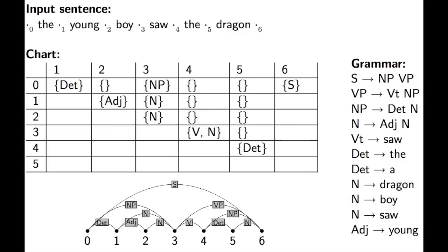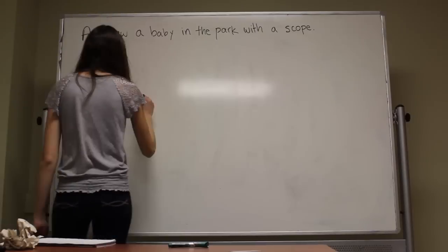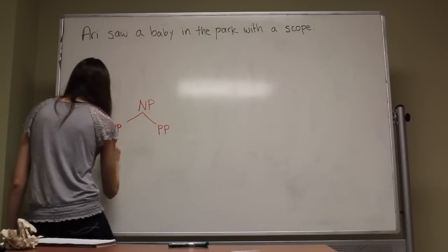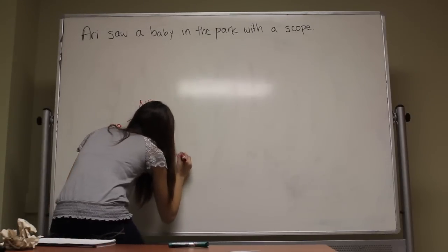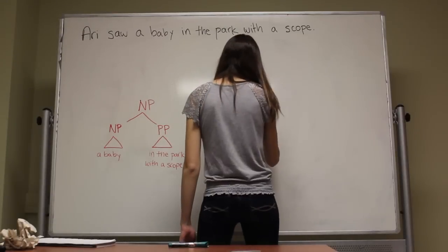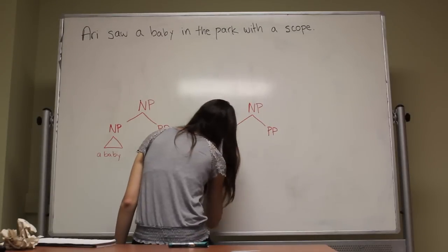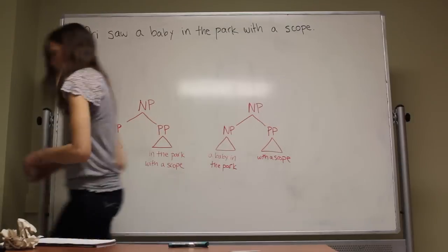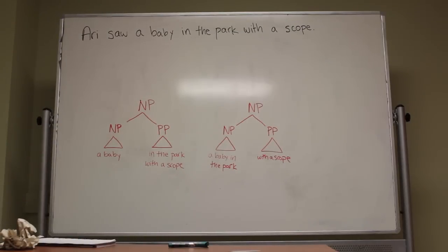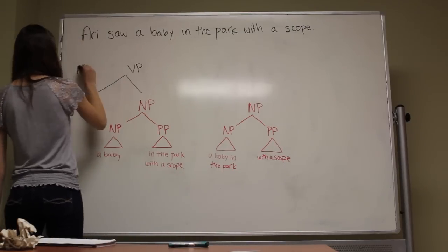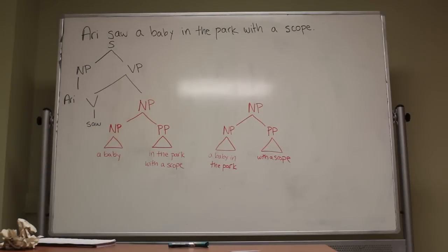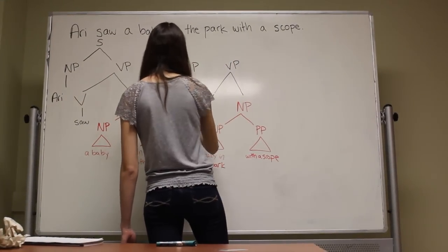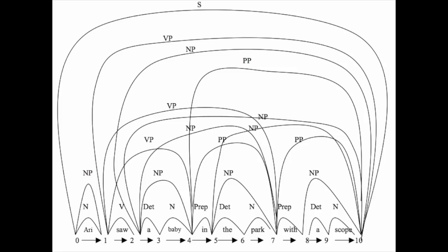How does the chart parser handle the ambiguous sentence: "Ari saw the baby in the park with a telescope"? Unlike before, when all the grammar rules matched up, here we see overlapping rules for the ambiguous parts of the sentence. For the NP from position 2 to 10, "a baby in the park with a scope," this can be decomposed into "a baby" (noun phrase) + "in the park with a scope" (prepositional phrase), or "a baby in the park" (noun phrase) + "with a scope" (prepositional phrase). Under both formulations, positions 1 to 10 become a verb phrase with a verb and a noun phrase. Chart parsers handle this by drawing lines for each possibility.